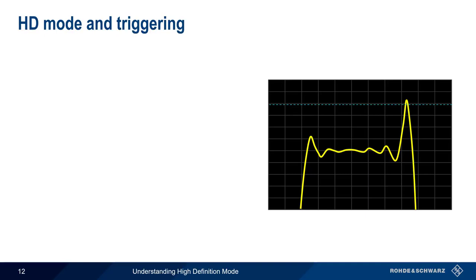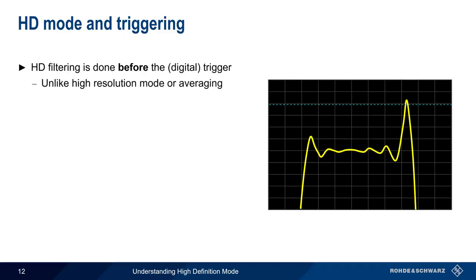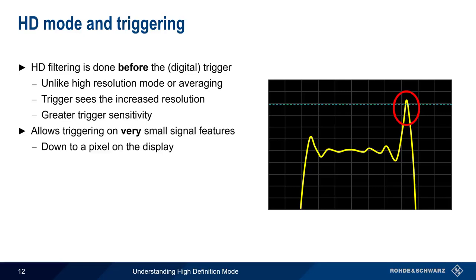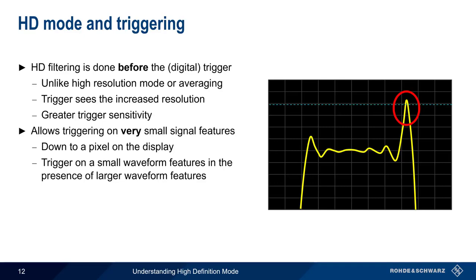The improvement in vertical resolution provided by high-definition mode can also aid in triggering. High-definition filtering is performed before a scope's digital trigger — this is different from high-resolution mode or averaging, which both occur after the trigger. Therefore, HD mode provides greater resolution to the triggering system and improves trigger sensitivity. The result is that triggering can now be done on very small signal features, in many cases down to a single pixel on the display, making it possible to trigger on small waveform features even in the presence of much larger waveform features.